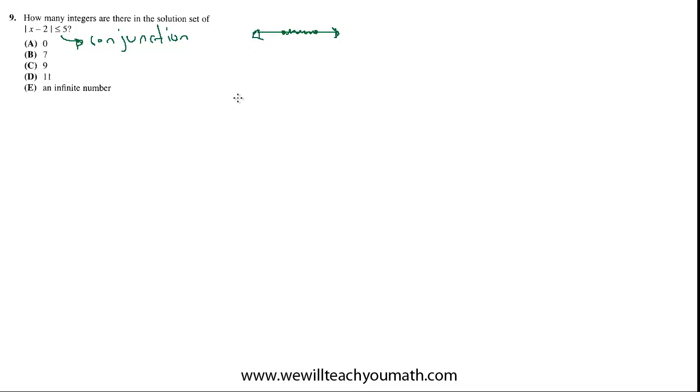So we have absolute value of x minus 2 is less than or equal to 5. So we're going to break that up. First thing we do is just the way it is, except without the absolute value signs. x minus 2 is less than or equal to 5. Then the other one that we want to write is again x minus 2 without the absolute value signs.